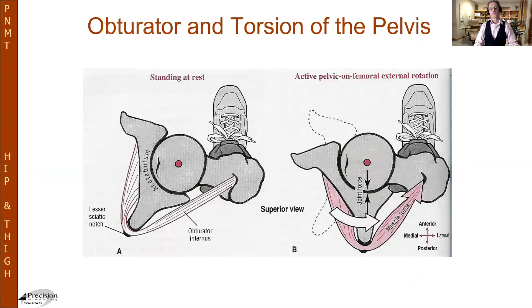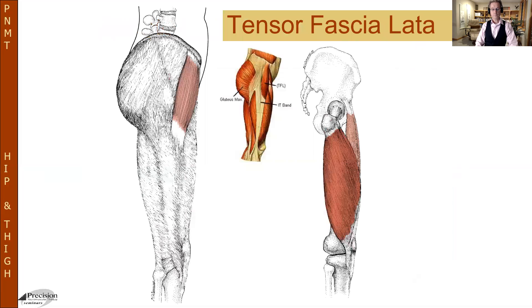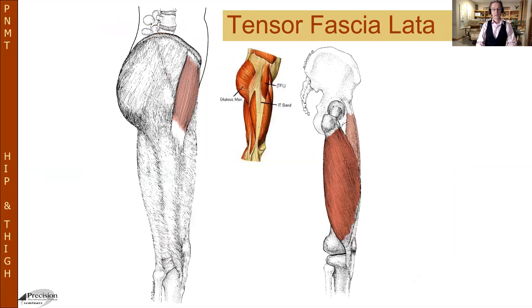Here's a picture of the TFL — tensor fasciae latae — and how it feeds into the ITB, the iliotibial band. You can see how the gluteus maximus, the medius, and the TFL are all feeding into what becomes the ITB, making them very important players in that regard.